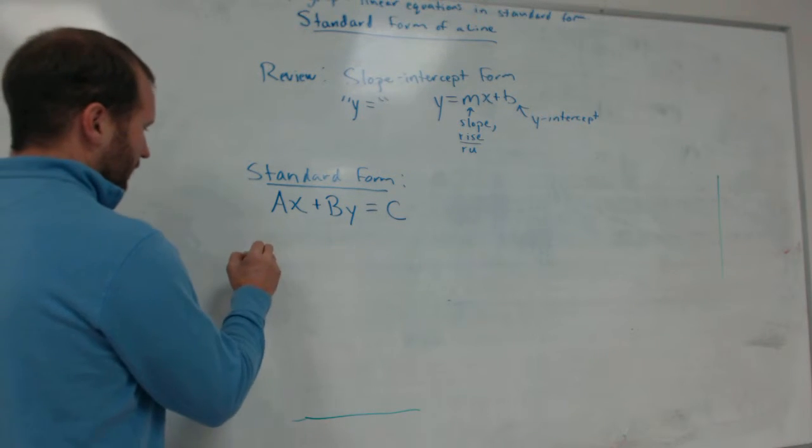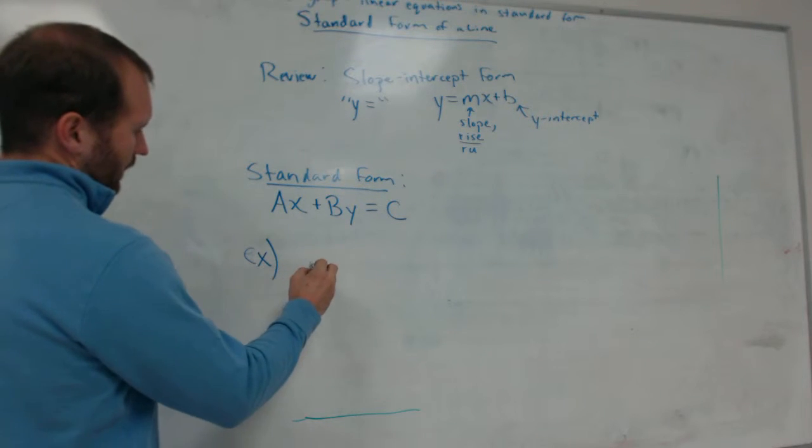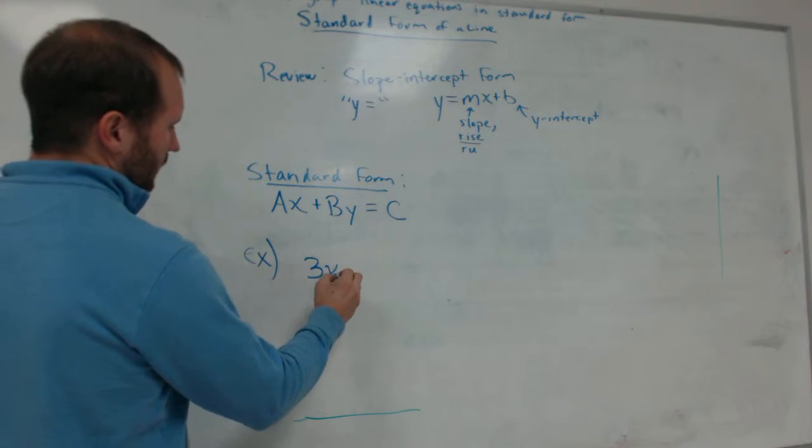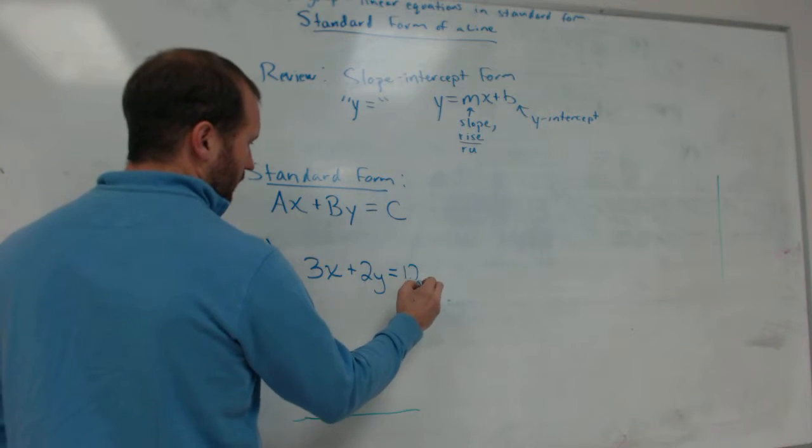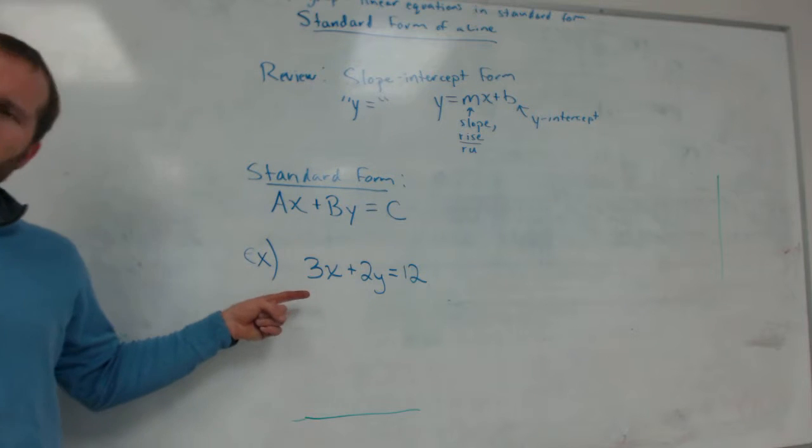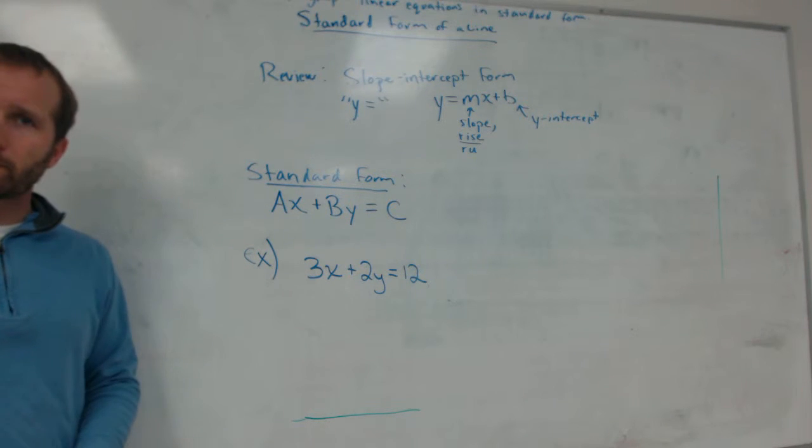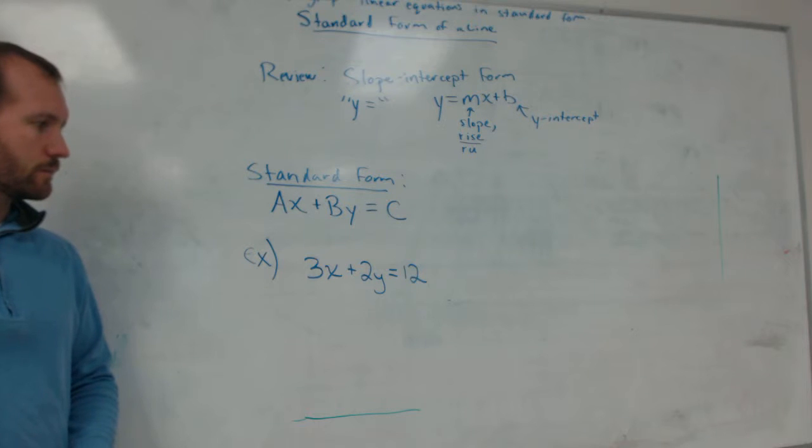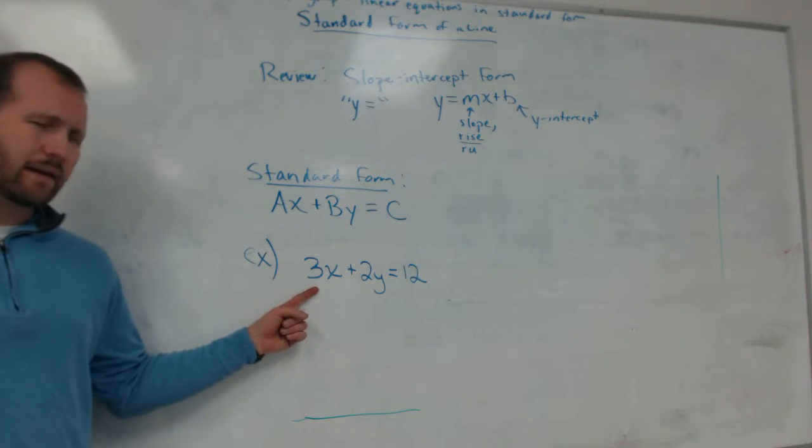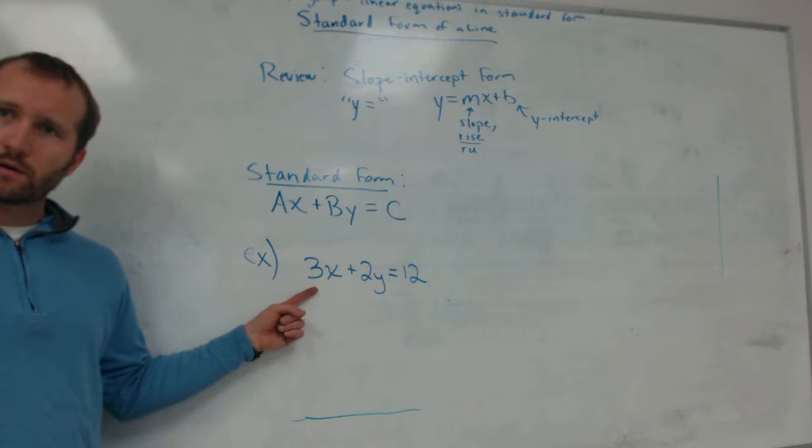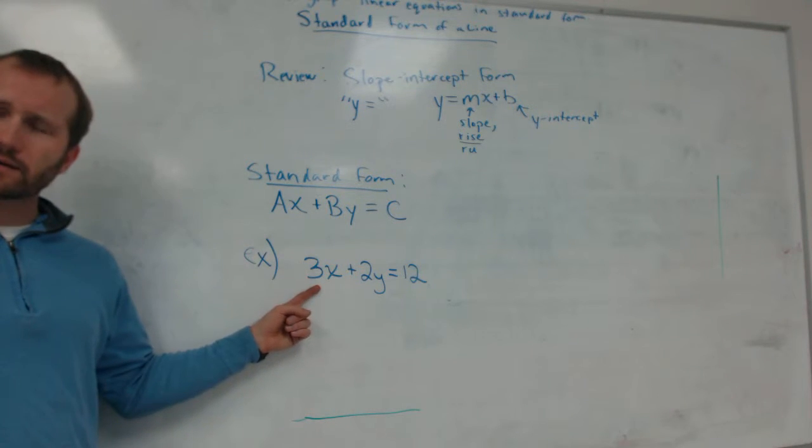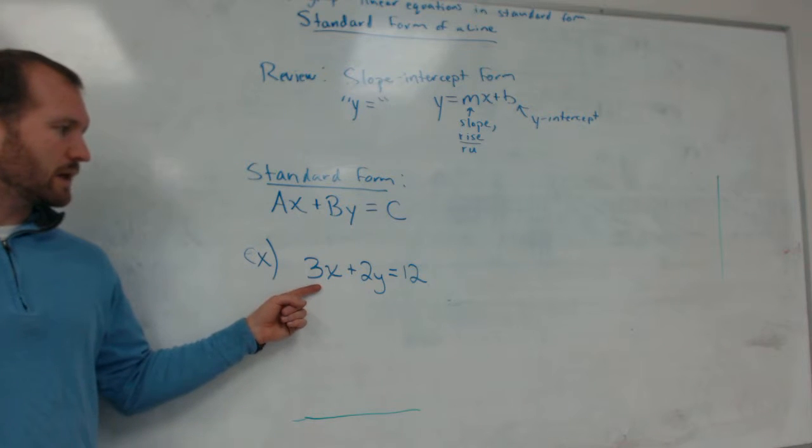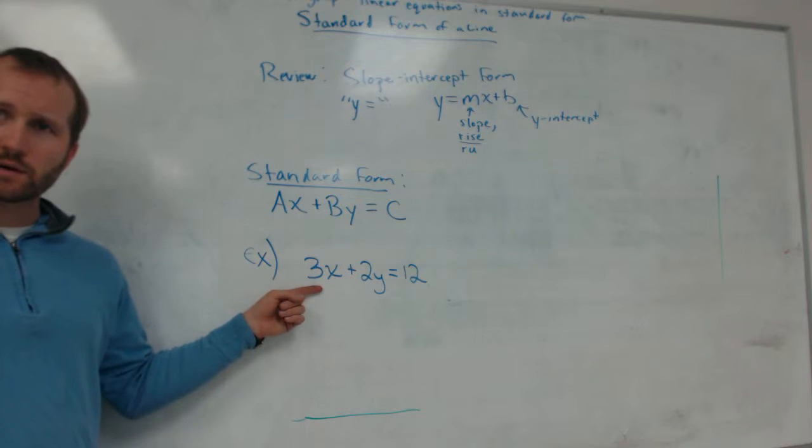Let's give an example of an equation that's written in standard form. If we had something like 3x plus 2y equals 12, that would be in standard form. What is a in this equation? A is the number in front of x. So what's the number in front of x? 3. What is b in this equation? 2. And what is c in this equation? 12.